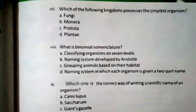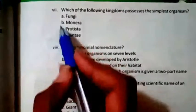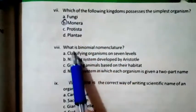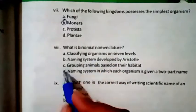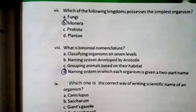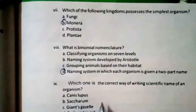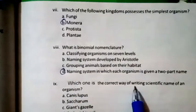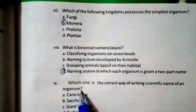Question seven: Which of the following kingdoms possesses the simplest organisms? The right option is Monera. Question: What is binomial nomenclature? The right option is a naming system in which each organism is given a two-part name.